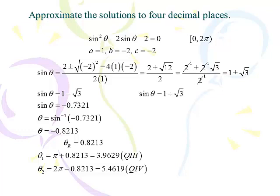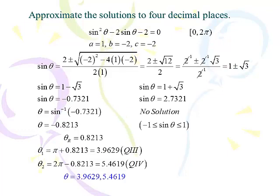Let's go to the other side. 1 plus √3 is 2.7 — that's way too big. Taking the inverse sine of it gives an error, so we only end up with the two answers from the left side: 3.9629 and 5.4619. You could end up with four, but a has to be a pretty large value for that to happen.